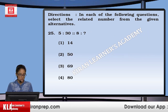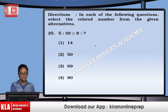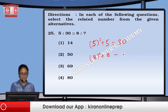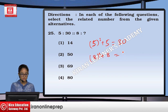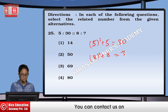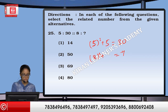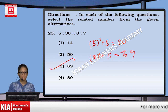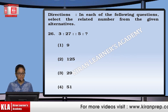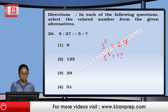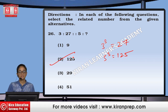Next, 5 squared plus 5 gives us 30. Similarly, 8 squared plus 8 gives us 72. And 8 squared plus 5 gives us 69 — that means option number 3rd.